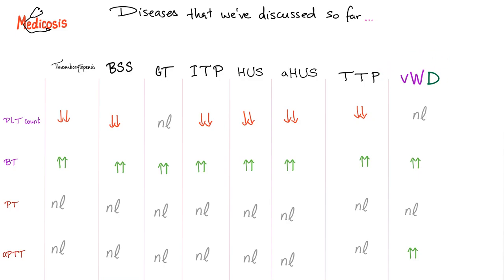As you know, in von Willebrand disease, the platelet count is normal, bleeding time is prolonged, and the PT is normal. PTT is prolonged. Have you noticed that all of these have a prolonged bleeding time? Because all of these are considered primary hemostasis defects. Von Willebrand disease involves both primary and secondary defects.